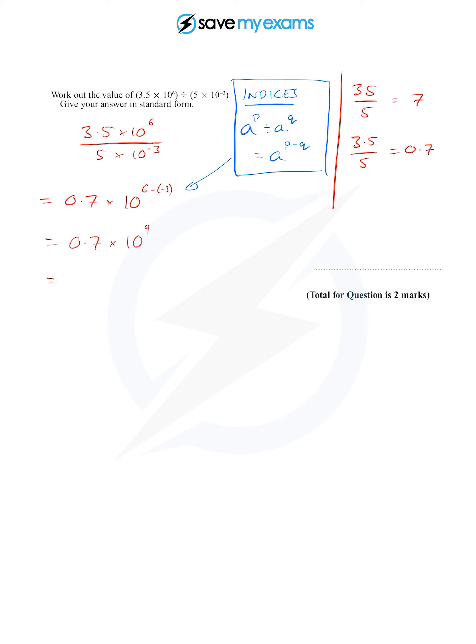To get 0.7 into 7, I'd need to multiply by 10. So I'm borrowing that 10 from the 10^9. Look, 10^9 is 10 × 10^8—think about adding the powers: 10^1 × 10^8 is 10^9.